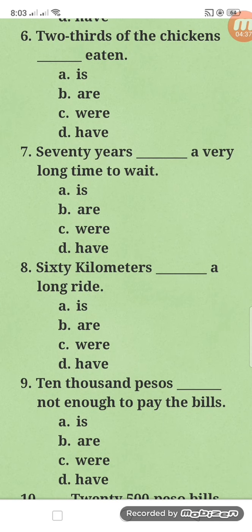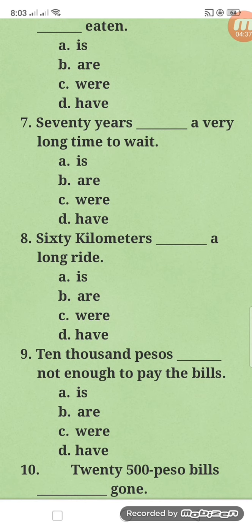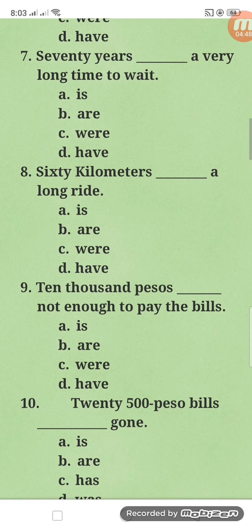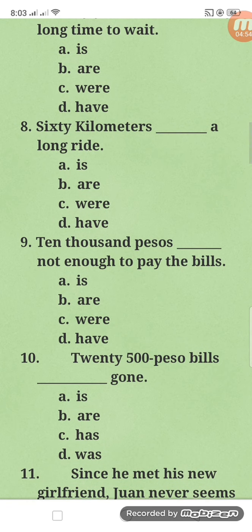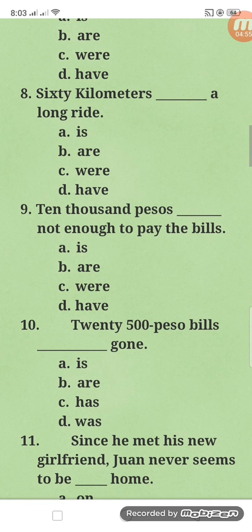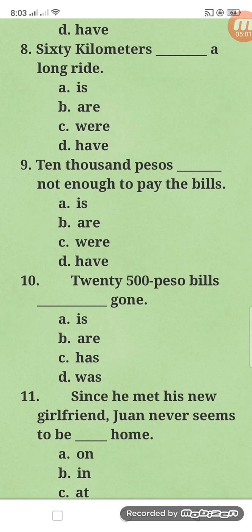Number seven: 70 years is a very long time to wait — letter A. Times, distance, and amount of money always take singular verb. Number eight: 60 kilometers is a long ride — because this is distance. And 10,000 pesos is not enough to pay the bills — that's an amount of money. So letter A for both.